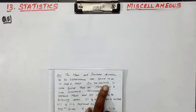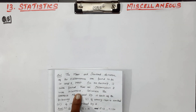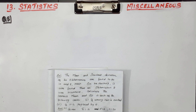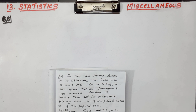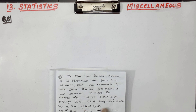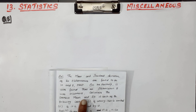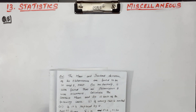20 observations — checking. It was found that one wrong item is omitted. That is a wrong observation.